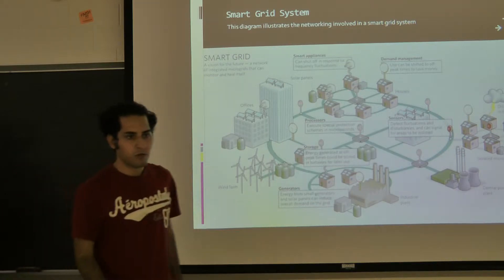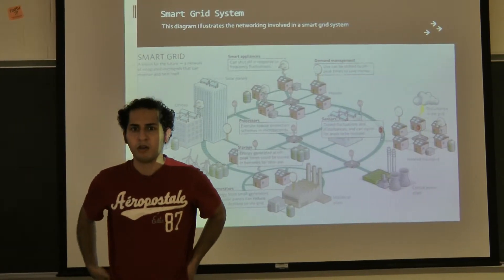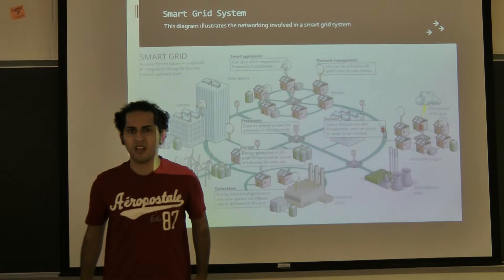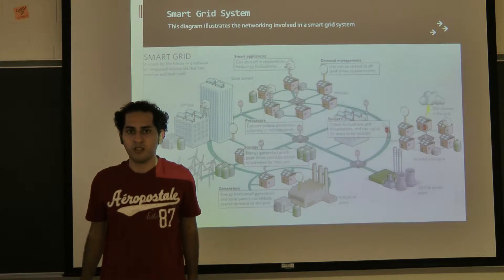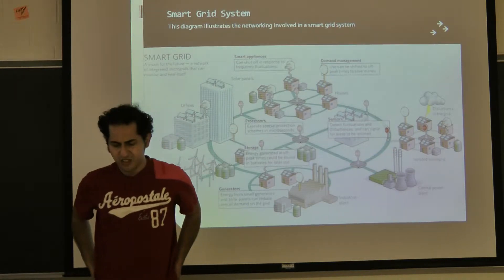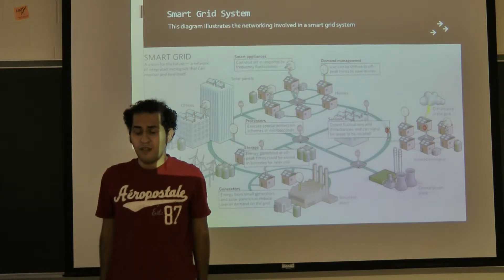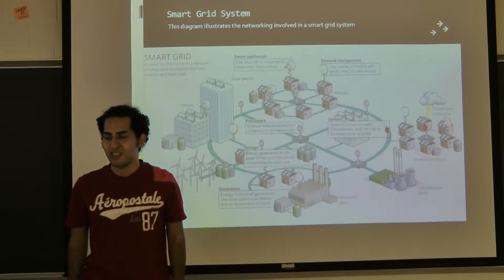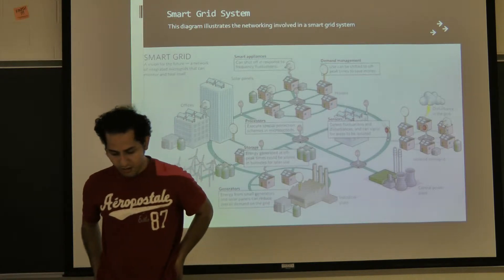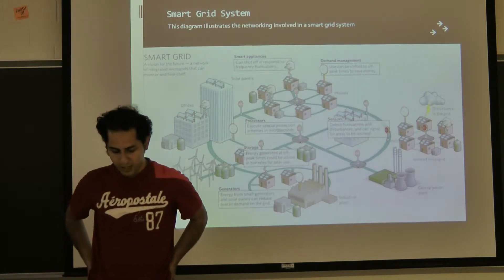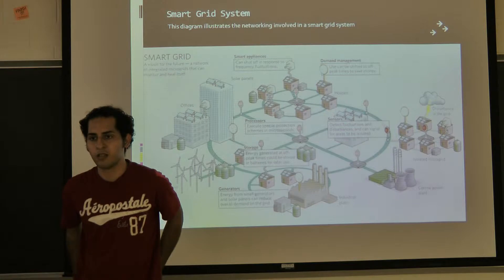Now I will talk about the smart grid. The main purpose of the smart grid is to deliver power from the supplier to the consumer using a two-way digital communication system. The smart grid is the digital version of the electric grid, which supports electricity generation, transmission, distribution, and control.